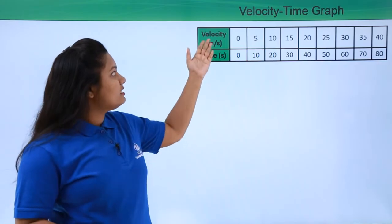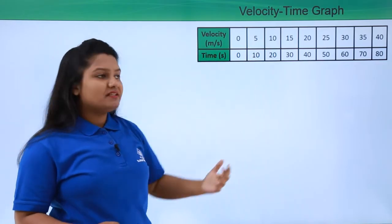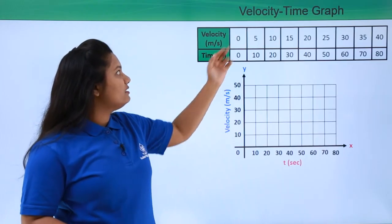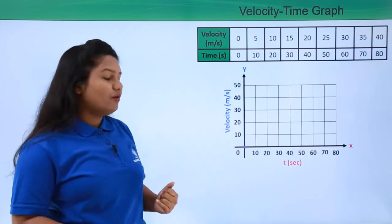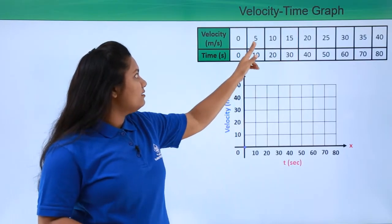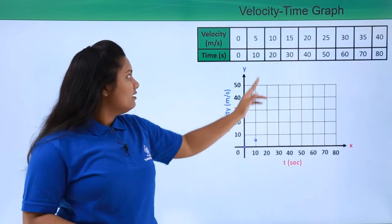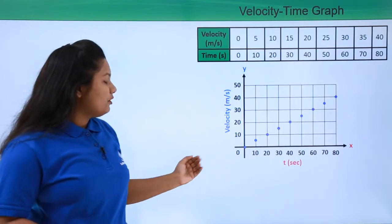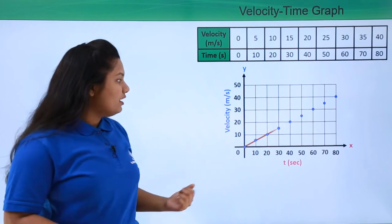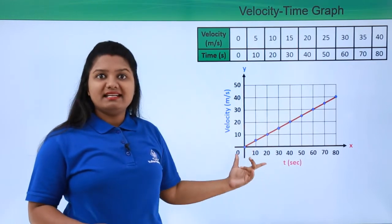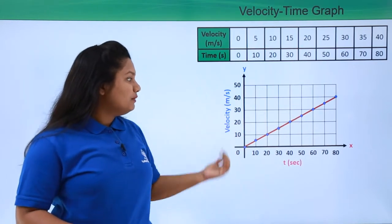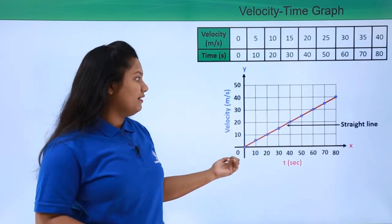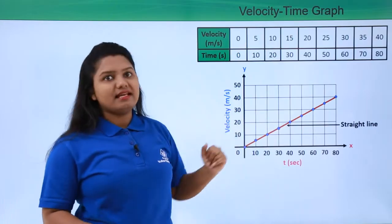Now let us try to plot a new set of velocity-time information on the cartesian plane. Our first point will be (0, 0) at the origin, the second point is (10, 5), the third point is (20, 10), and so on. On joining all these points we get a straight line, but this line is not parallel to the x-axis — it is inclined to the x-axis.